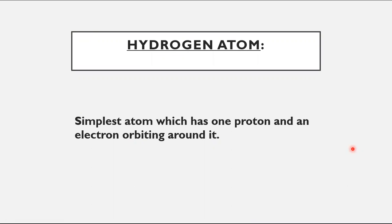The hydrogen atom is the simplest atom you will ever find. It has one proton in the nucleus and an electron orbiting around it. In this chapter, we will discuss the spectrum produced by different electron transitions in the hydrogen atom. The spectrum consists of electromagnetic radiation of different colors and wavelengths.